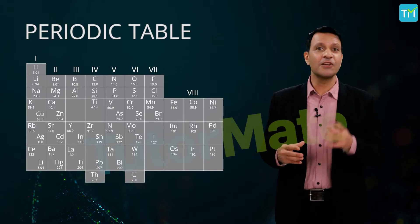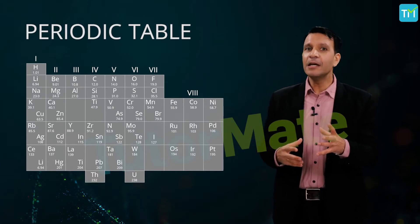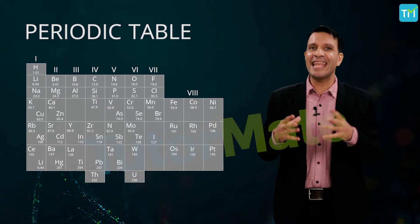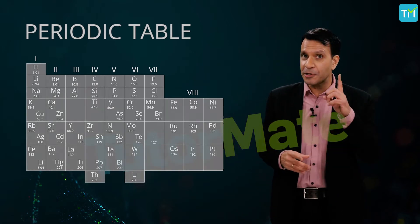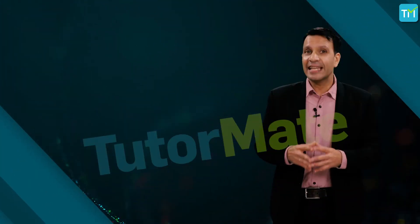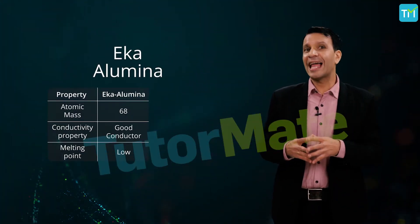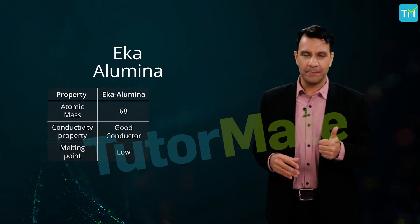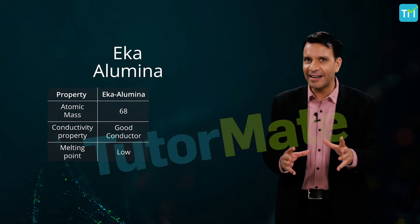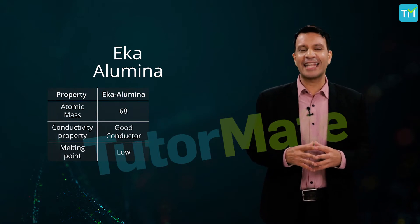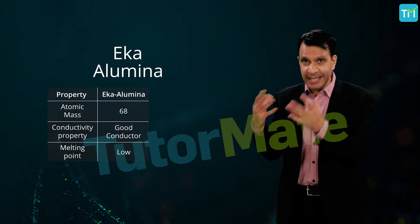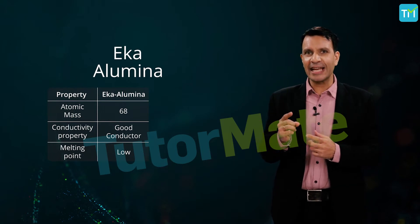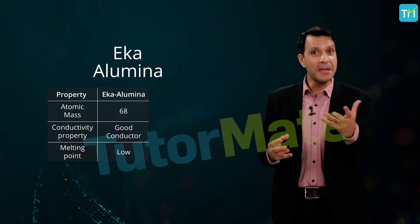'Eka' in Sanskrit means 'first,' so eka-aluminium means the element that comes first after aluminium. Mendeleev not only named these undiscovered elements but also predicted their chemical properties. He stated that eka-aluminium would have an atomic mass of 68, would be a good conductor of electricity, would be malleable and ductile, hard and shiny, but with a very low melting point. He predicted all those characteristics simply by looking at where the gap was and understanding how the surrounding elements behave.